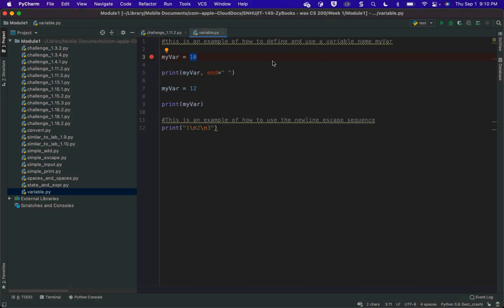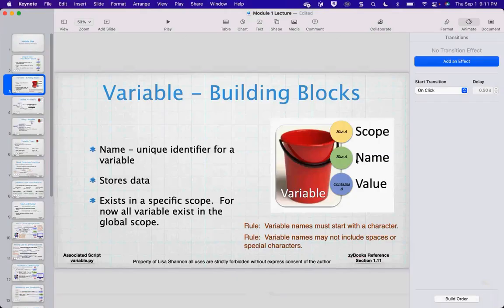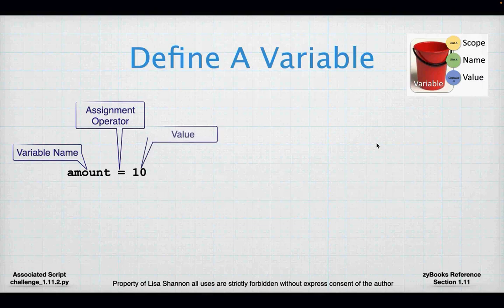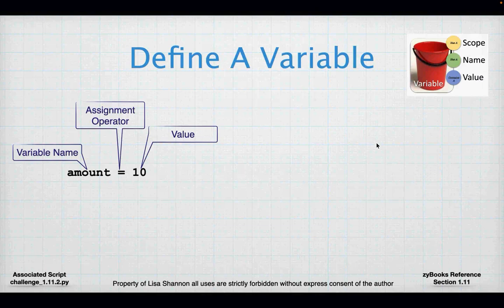I know my_var is a variable because it is on the left-hand side of a single equal sign, and I know the value is 10 because it is on the right-hand side. That's how you read this line of code. Zybooks has some great qualities but it doesn't teach you how to read code — you have to know how to read it and write it. I'm going to say this a lot for the first three weeks: I know it's a variable because it's on the left-hand side of a single equal sign.